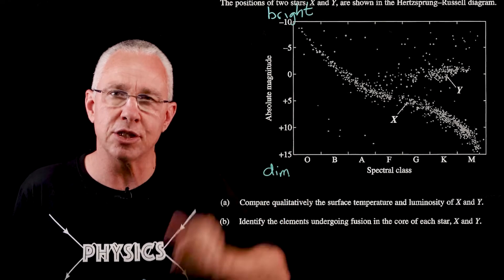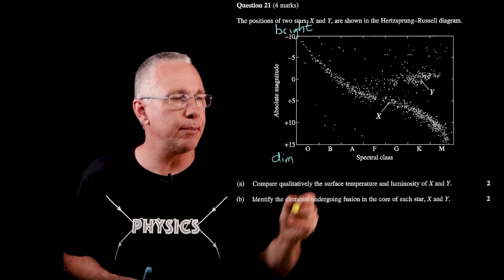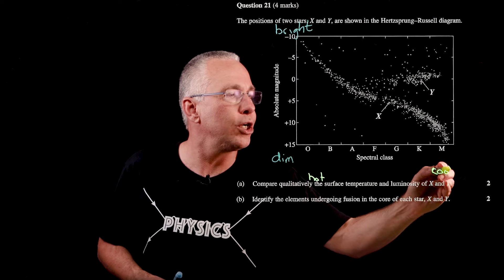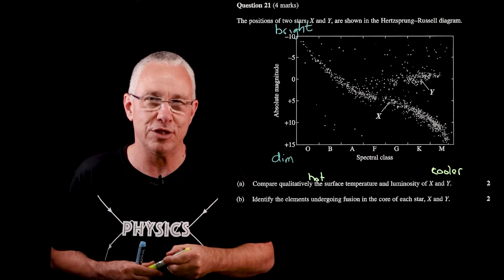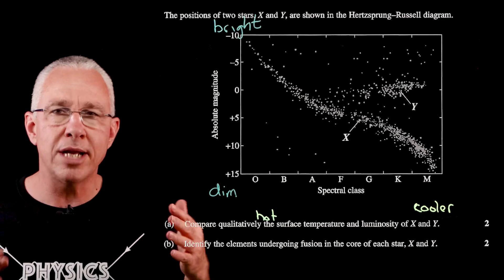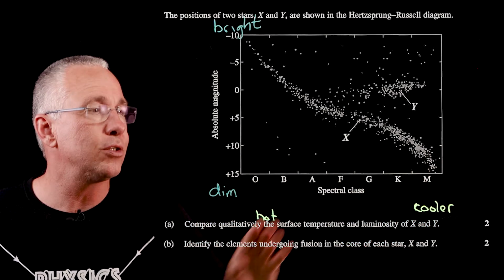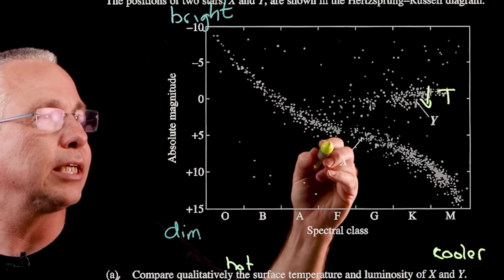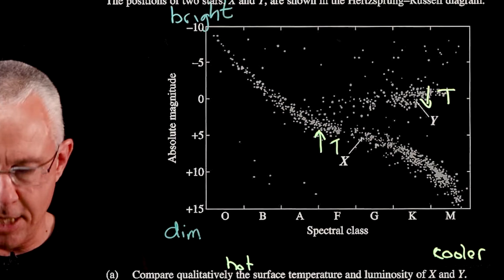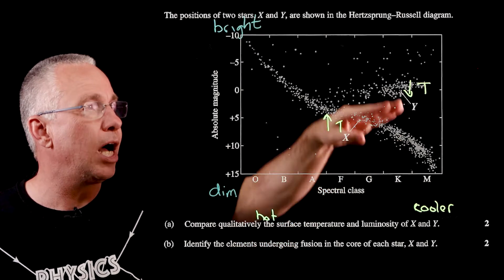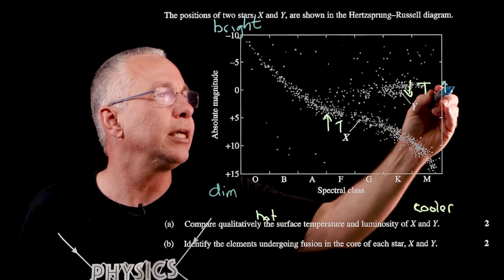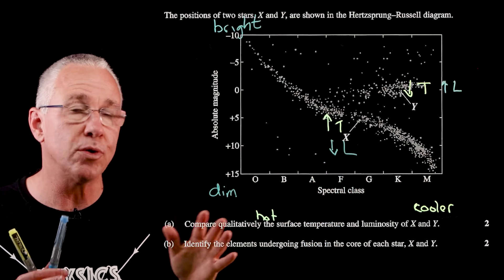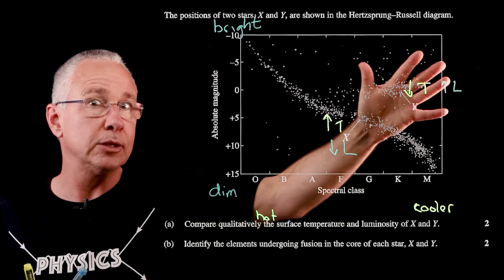On the y-axis we have absolute magnitude — stars that are very bright are at the top, and very dim stars are at the bottom, so this gives us an indication of luminosity. On the x-axis we have temperature — stars on the left are very hot and those on the right are relatively cooler, though still possibly two to three thousand Kelvin. Looking at the diagram, star Y is further to the right, so it has a lower temperature than star X. In terms of luminosity, Y sits higher on the diagram, so its luminosity is greater, while star X has a lower luminosity.